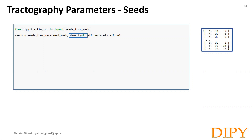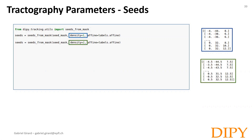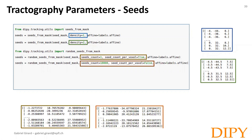Another thing to consider is where you want to initiate tractography and how many seeds you want. The seed_from_mask function will place seeds in all voxels of the mask. With density 1, the seed will be placed at the center of the voxel. With density 2, seeds will be placed on a 2x2x2 grid, generating 8 seeds per voxel. With density 3, seeds will be placed on a 3x3x3 grid, forming 27 seeds per voxel. With the random seed_from_mask, seeds are placed randomly within the voxel boundary — you can generate N seeds per voxel or N seeds total for the whole seed mask.